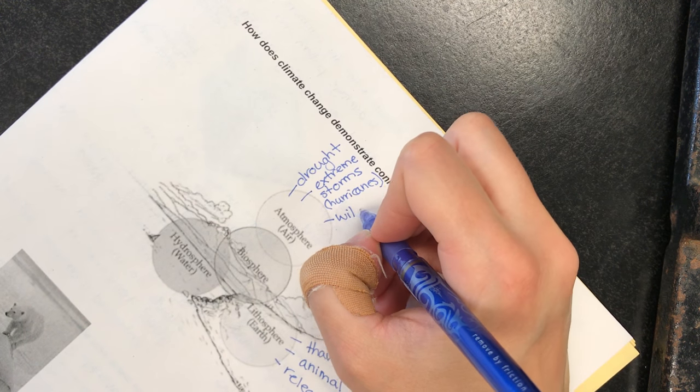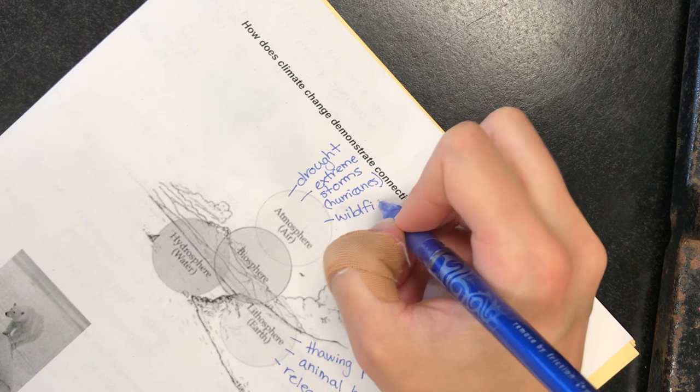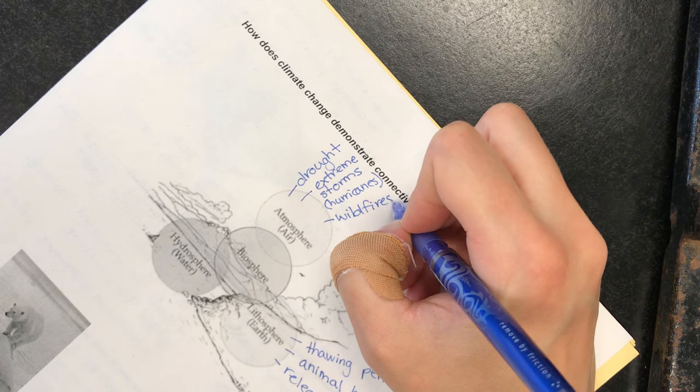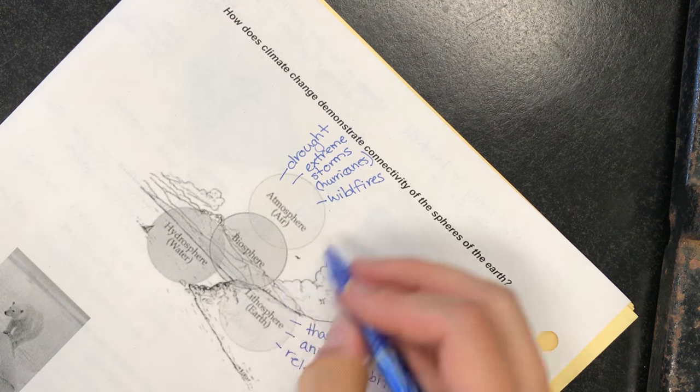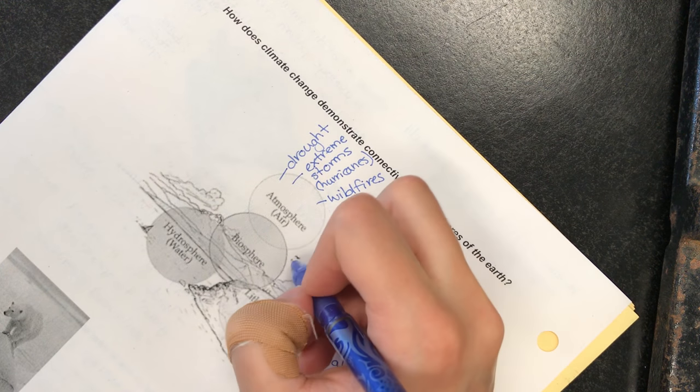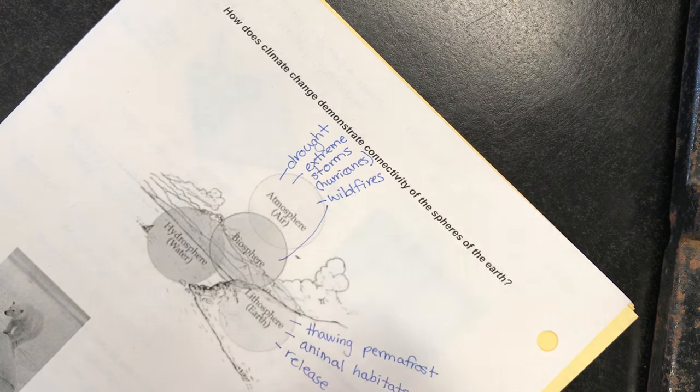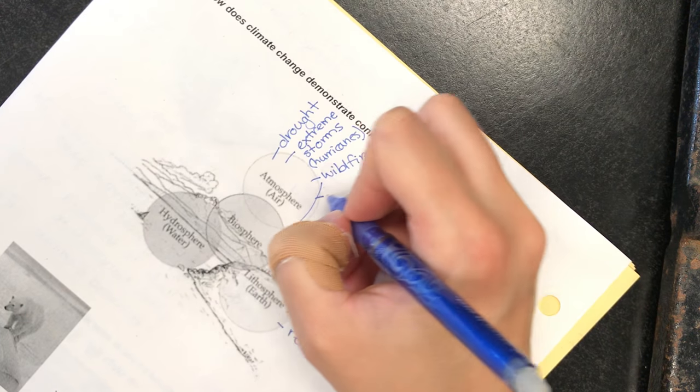Hotter temperatures cause more wildfires which release more greenhouse gases. You can also add wildfires to the biosphere, they're kind of connected. And then heat waves.